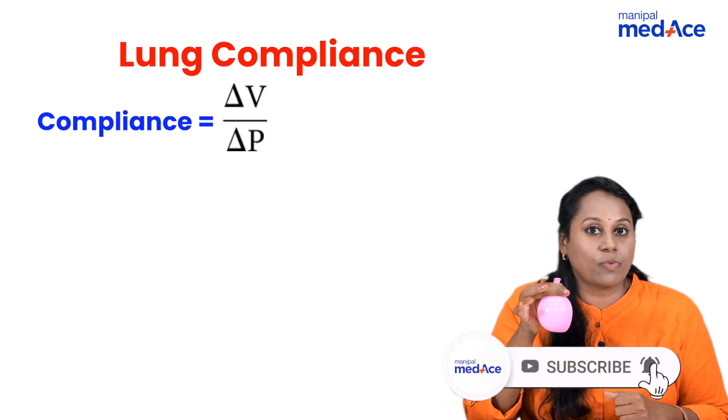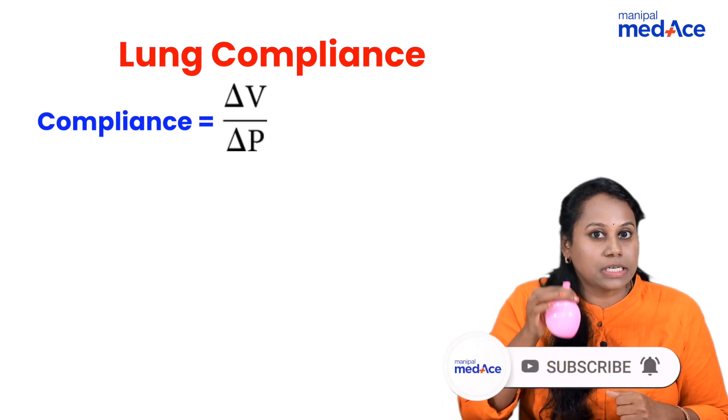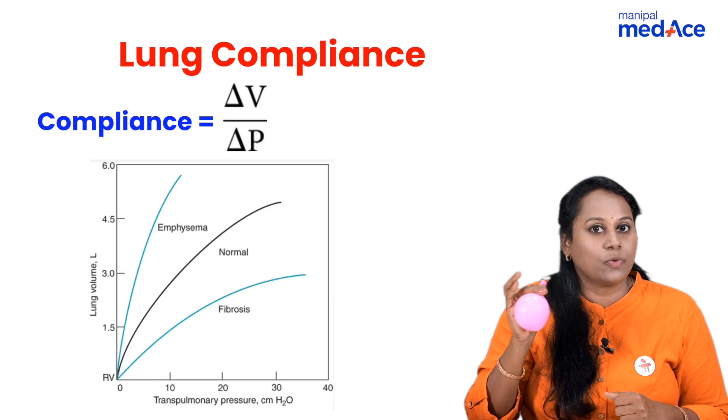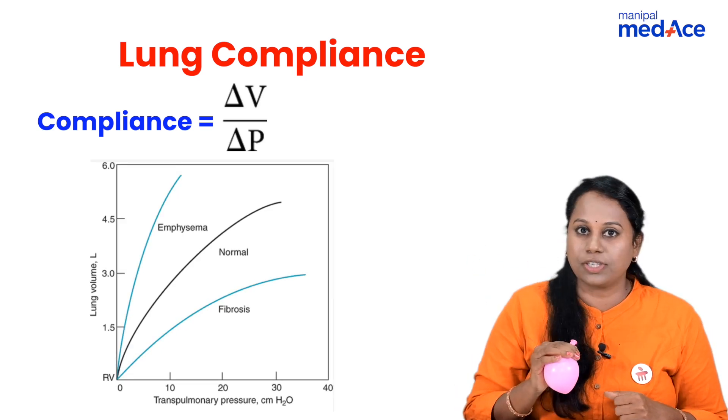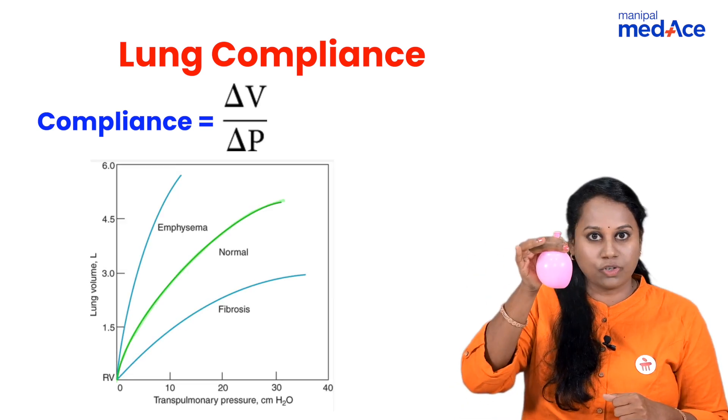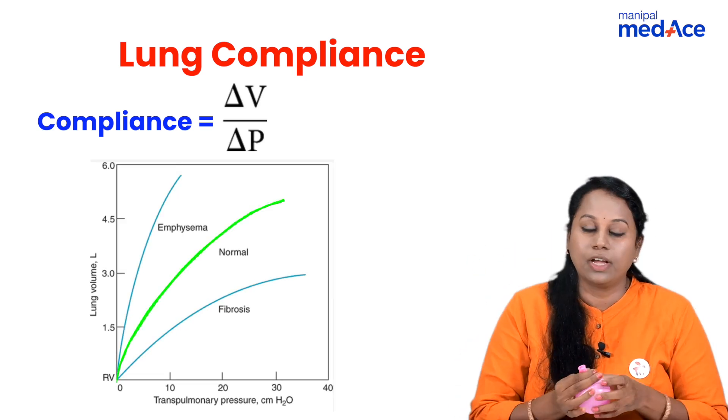That is why in the compliance curve also, we have change in volume for the change in pressure. This is a normal lung.